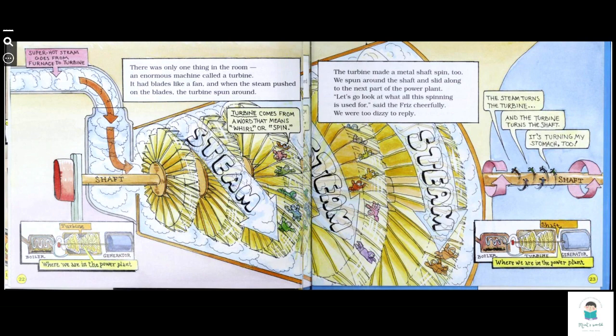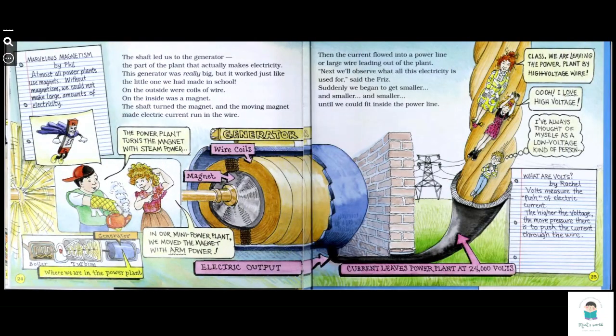The turbine made a metal shaft spin too. We spun around the shaft and slid along to the next part of the power plant. Let's go look at what all this spinning is for, said the Friz cheerfully. We are too dizzy to reply. Now we will move to the generator. The steam turns the turbine and the turbine turns the shaft. It's turning my stomach too.